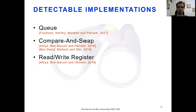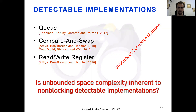This makes the design of detectable recoverable algorithms a hard task. In the last couple of years, several detectable implementations have been presented. Friedman et al. presented a detectable queue. A detectable compare-and-swap was developed independently by both Atiyah et al. and Ben David et al. Atiyah et al. also presented a detectable read-write register. All these detectable implementations share the fact that unbounded sequence numbers are used, and therefore all have unbounded space complexity. This raises the question: is unbounded space inherent to detectable implementations?